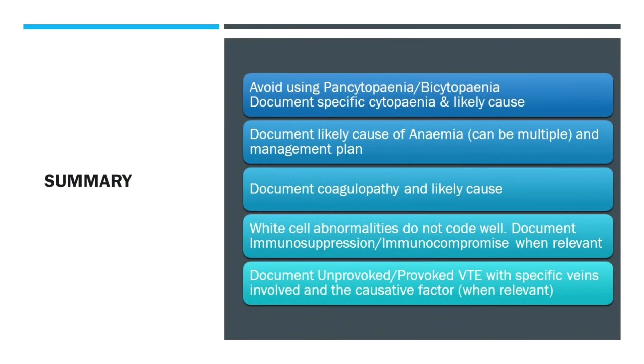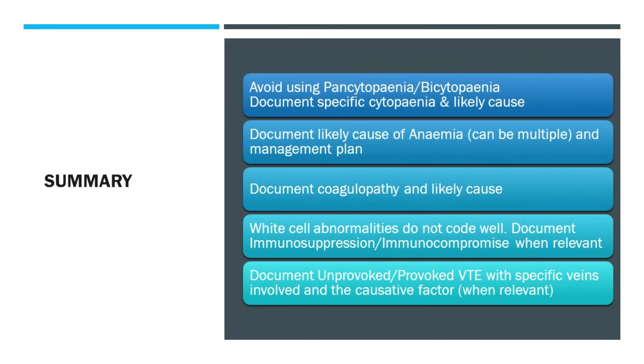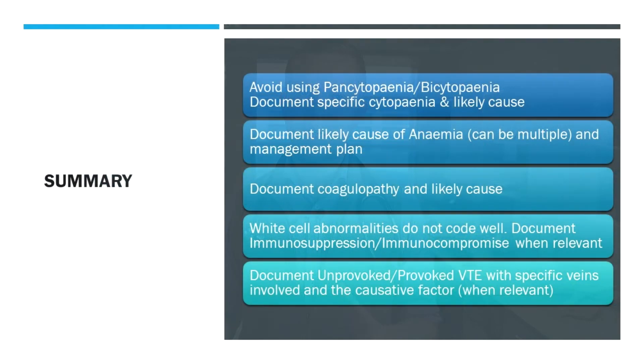To summarise: avoid using terms like pancytopenia or bi-cytopenia unless qualifying what's causing them — separate them into anaemia, thrombocytopenia, and leukopenia or neutropenia as appropriate. There are many causes of anaemia; please document them and document a plan, whether a repeat blood test, transfusion, or iron infusion. If there's a coagulopathy or low platelet count, document that specifically along with the likely cause. Be aware that white cell abnormalities don't code well, but immunocompromised status or immunosuppression does — and please write why they are immunocompromised. For DVTs, document whether they're provoked or unprovoked, specify the causative factor when provoked, and note how many veins are involved, as the number of veins will increase complexity accordingly. Thanks for listening.